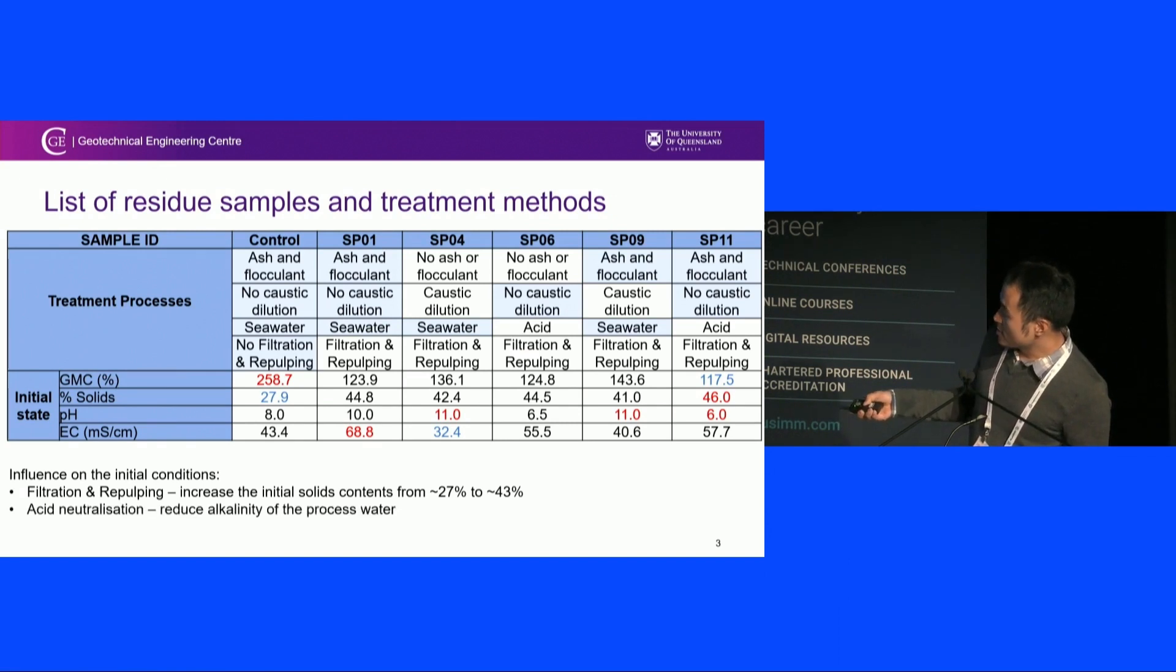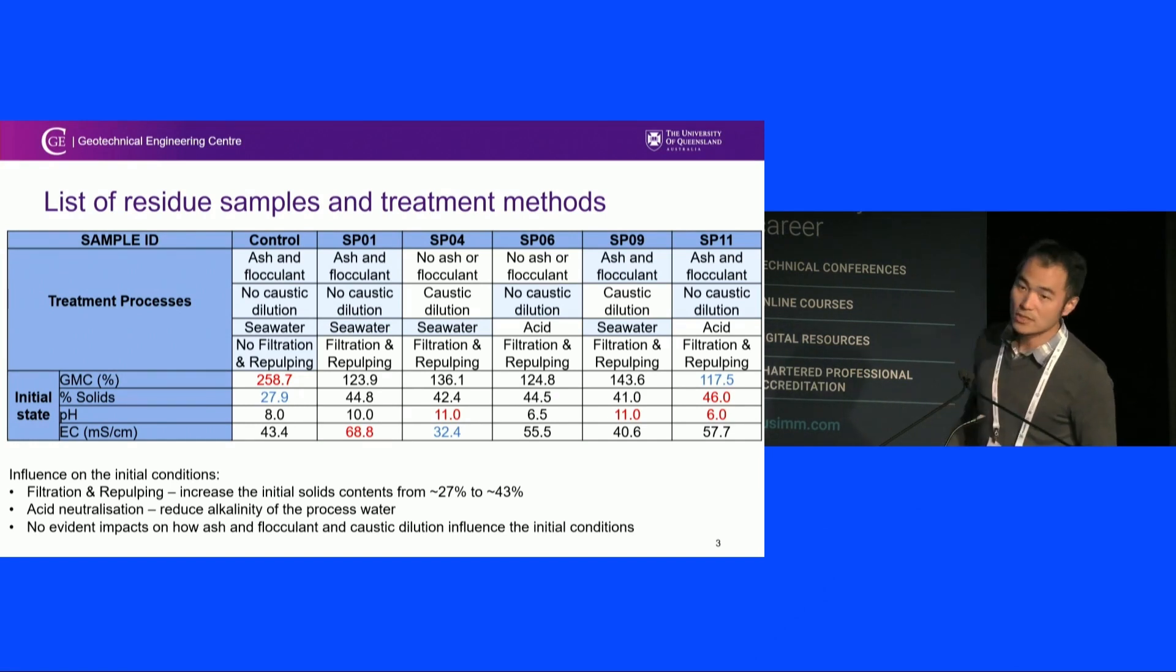If we look further, if you add acid, the pH actually becomes relatively neutral, whereas the rest of the material still are quite alkaline, except for the control which is around 8%. How about the rest of the material, the MAP processes? We don't really see a significant impact on how ash, flocculant, and caustic dilution influence the initial conditions.